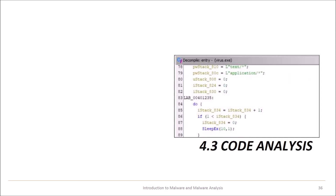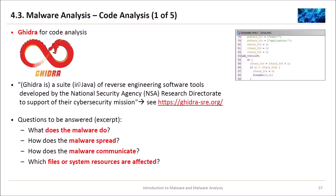Now let's have a look at code analysis. For code analysis I use Ghidra — a suite in Java for reverse engineering, developed by the National Security Agency (NSA) research directorate to support their cybersecurity mission. You can download it from ghidra-sre.org. Questions to be answered in the code analysis are: what does the malware do, how does it spread, how does it communicate, and which files or system resources are affected?